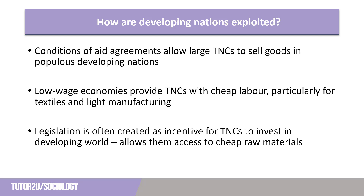Another way in which the developing world is exploited is through allowing TNCs to set up in their nation and employ local labour to produce their goods. Workers in the developing world will often earn less than their Western counterparts and do not enjoy the same legal protections such as health and safety legislation, paid holidays and sick leave. This lowers the cost for TNCs.